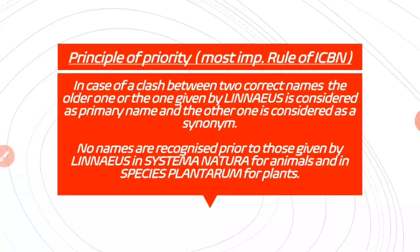The principle of priority is the most important rule of the International Code of Botanical Nomenclature (ICBN). According to this principle, in case of a clash between two correct scientific names, the older one — or the one given by Linnaeus — is considered the primary name, and the other is considered a synonym or secondary name. No names shall be recognized prior to those given by Linnaeus in Systema Naturae for animals and in Species Plantarum for plants; any earlier names not mentioned in these works are considered null and void.